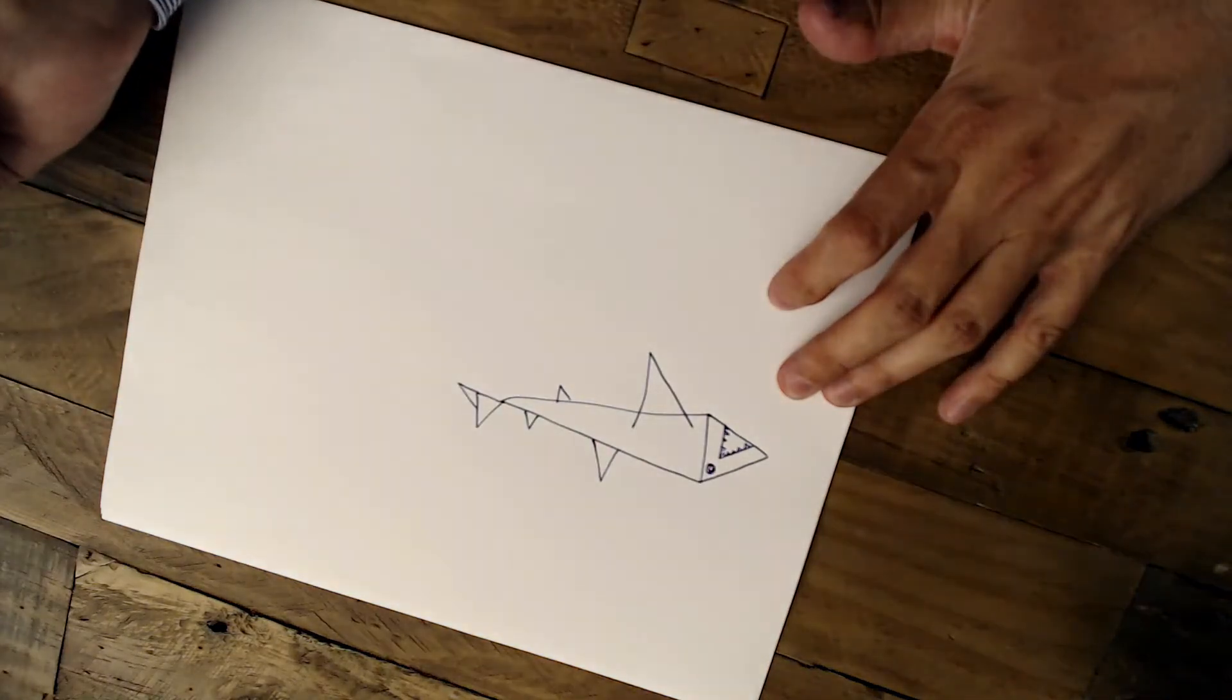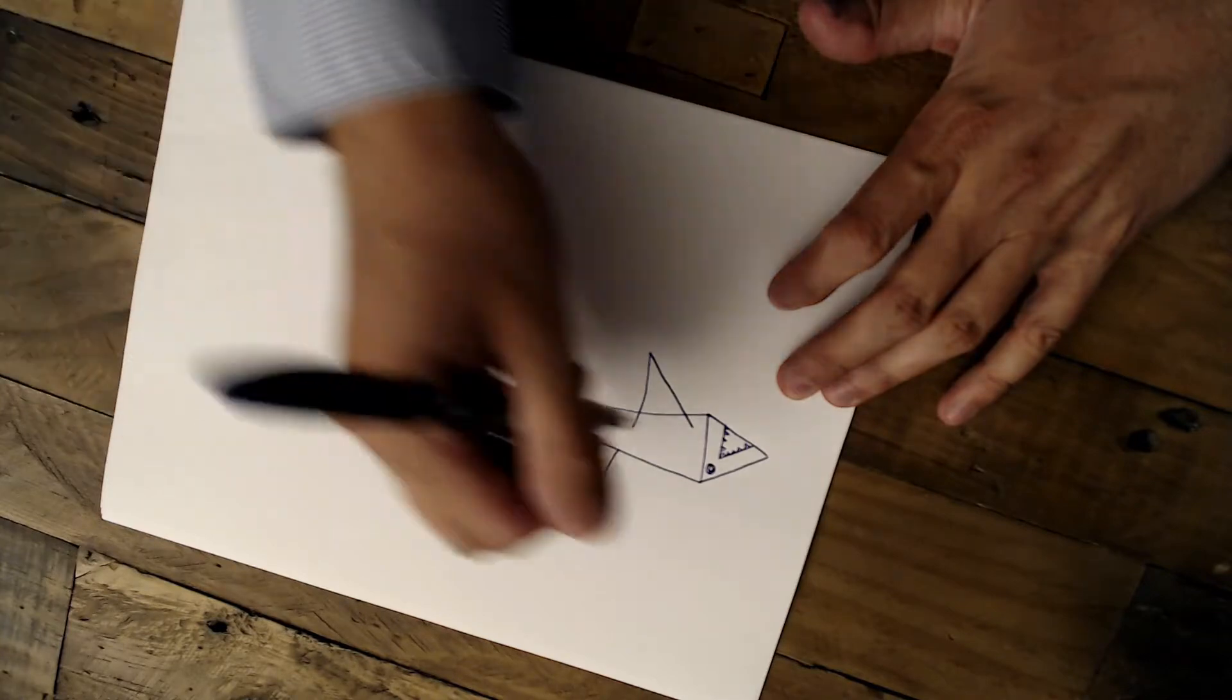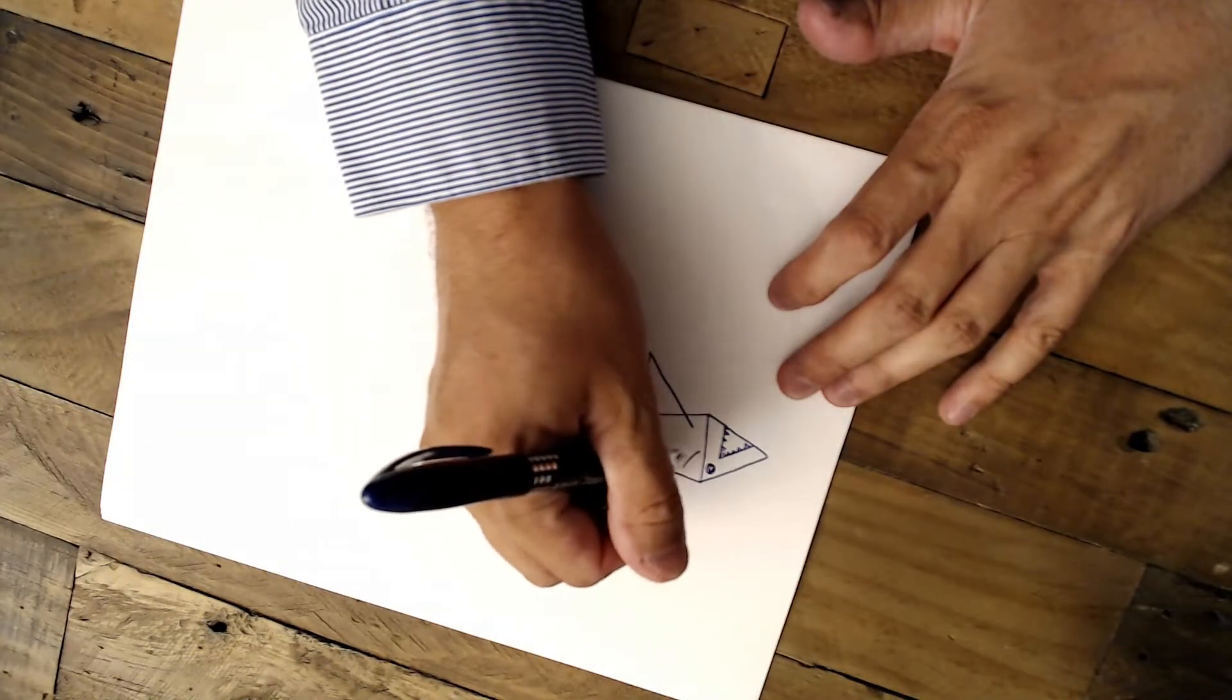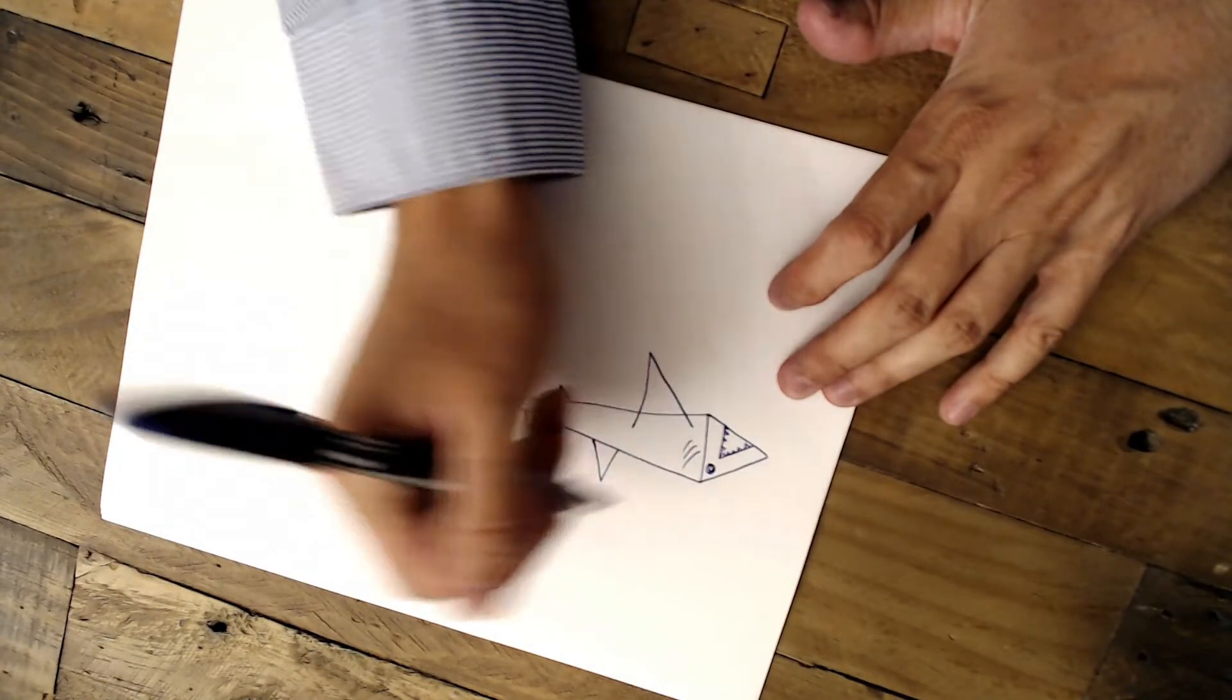He's looking pretty vicious. Finally, we're going to add his gills. So we'll do three curved lines like so.